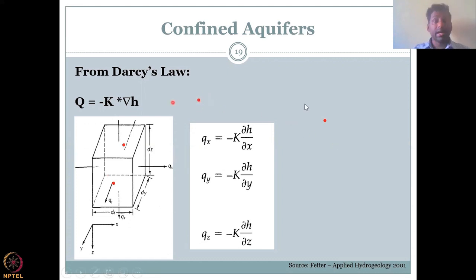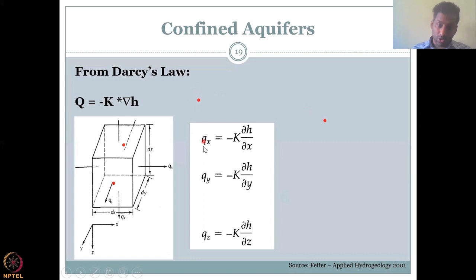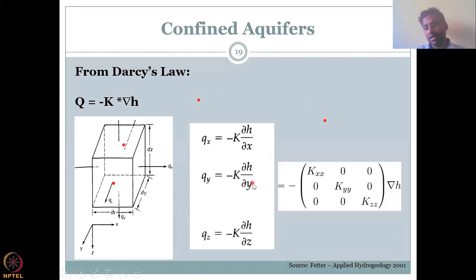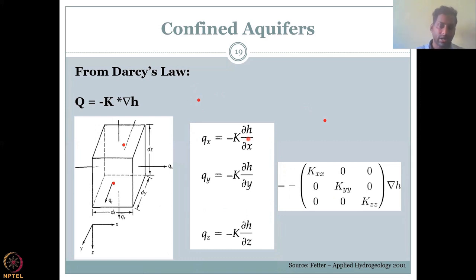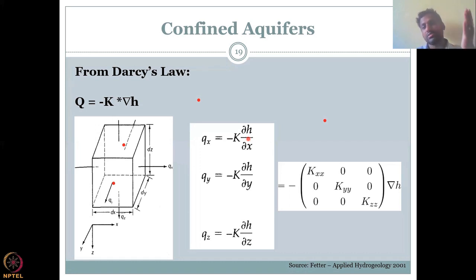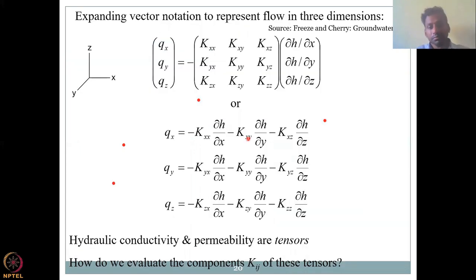Each axis estimates how it flows in the x-axis, y-axis, and z-axis — these are all different entities to be assessed. The movement from A to B happens in a three-dimensional plane, so it depends on qx, qy, and qz, and their combination gives the net Q. This can be represented as a vector times del H, the change in gradient. What changes is the hydraulic conductivity, because hydraulic conductivity is anisotropic and inhomogeneous. Most of the time, Kxx ≠ Kyy ≠ Kzz, so you need a matrix format to solve the tensors.